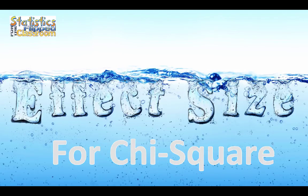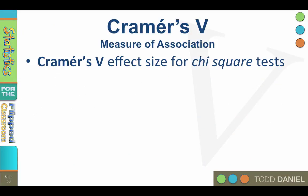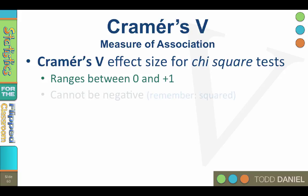As we have been learning about chi-square, I have mentioned a finding called Cramer's V. Cramer's V is the preferred measure of effect size for a chi-square, and it is a measure of association between two nominal variables. The range of possible values is between 0 and positive 1 inclusive. Cramer's V cannot be negative because chi-square uses squared values, and the minimum value for a chi-square is 0.